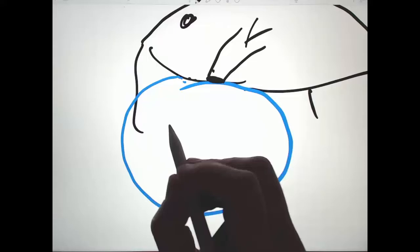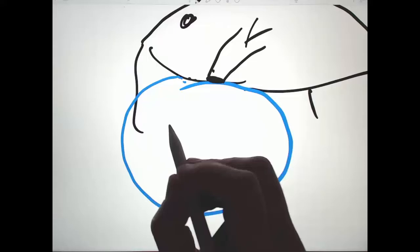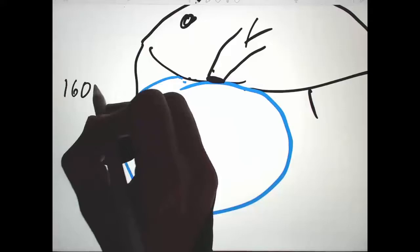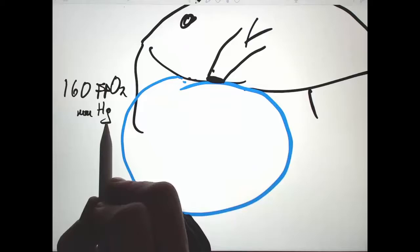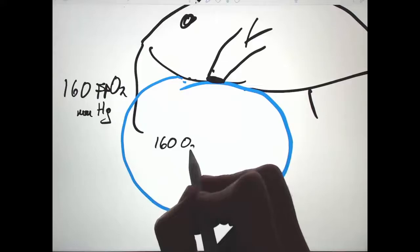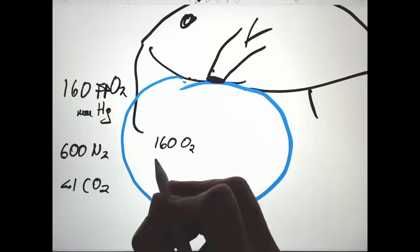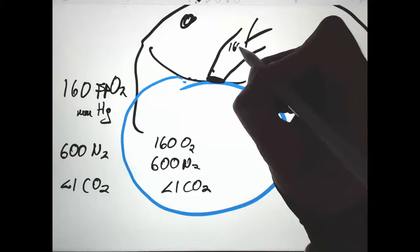We start off at a partial pressure equilibrium between the water, the bubble, and the insect when it's been up at the surface. The partial pressures are equal: 160 mmHg for oxygen, about 600 for nitrogen, and less than 1 for CO2 — in the bubble, the water, and the tracheal system alike.